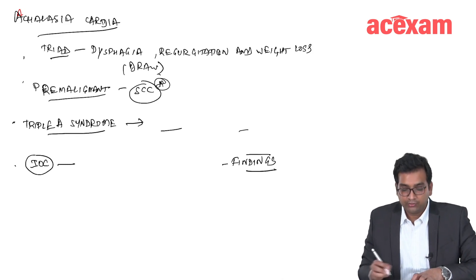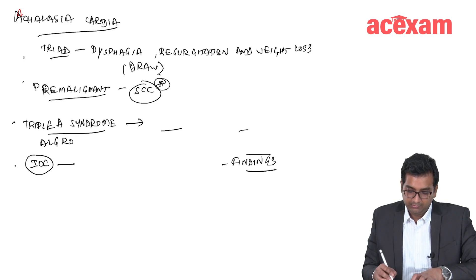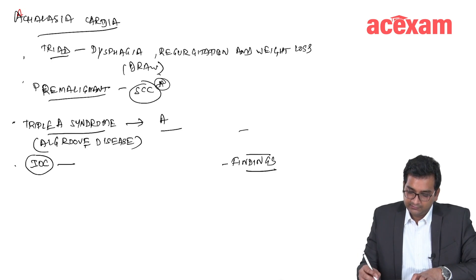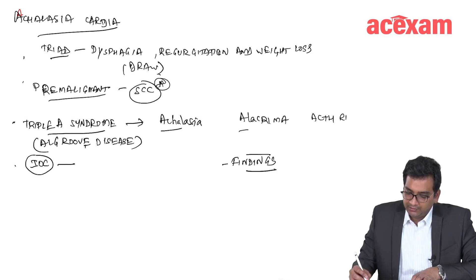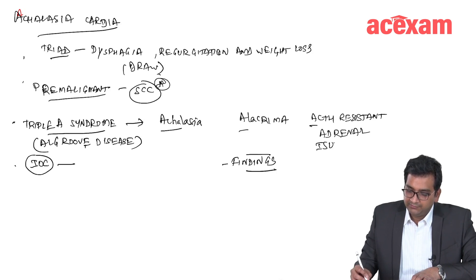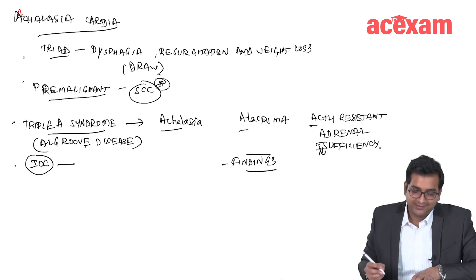The Triple A syndrome is also known as Allgrove's disease. It is characterized by three A's: achalasia, alacrimia, and ACTH-resistant adrenal insufficiency.